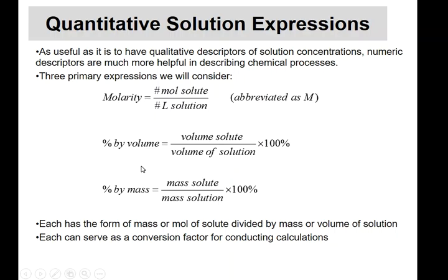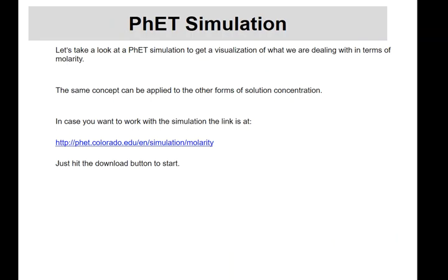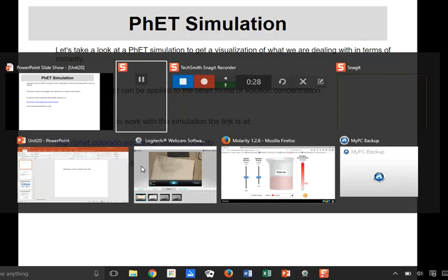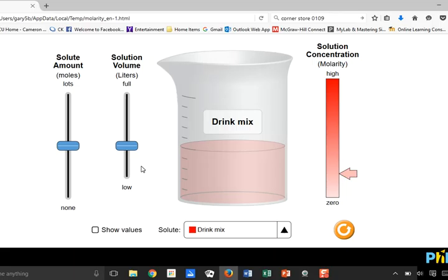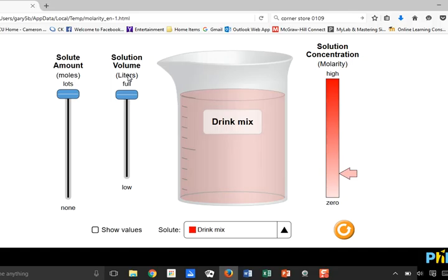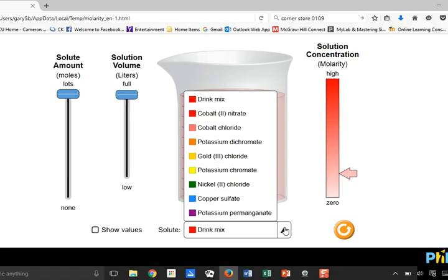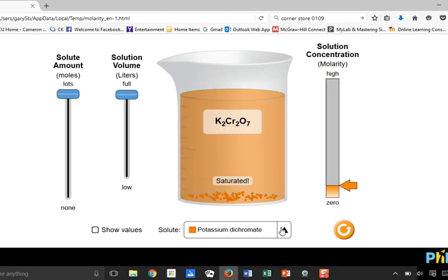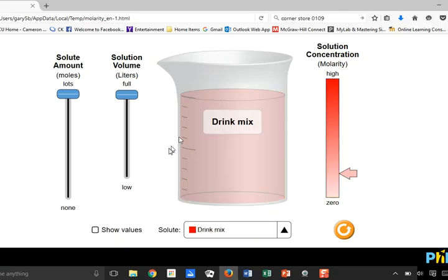We're going to look at a PhET simulation on solutions to give a visual sense of concentration for those of you who are more visual than algebraic. In the simulation, we have three columns to watch: solute amount in moles, solution volume in liters, and solution concentration in molarity. The definition of molarity is moles of solute over liters of solution, so the simulation is measuring solute in moles and volume in liters.